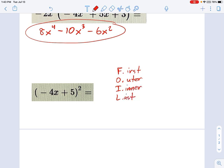And I'll show you what I mean by that. Let's rewrite this as negative 4x plus 5. And it's squared. So what that means is you multiply it by itself. Negative 4x plus 5. And here's what I mean by first, outer, inner, and last. The first terms are negative 4x times negative 4x. That's 16x-squared.